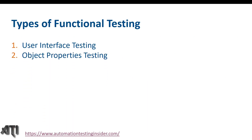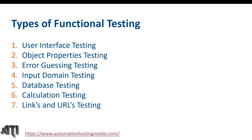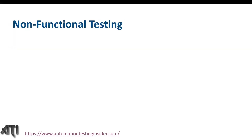The different types of functional testing include: user interface testing, object properties testing, error guessing testing, input domain testing, database testing, calculation testing, and links and URL testing. As I mentioned, the complete testing hierarchy video is linked in the description box where I have explained all of these in brief.